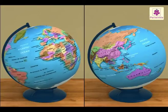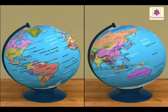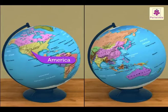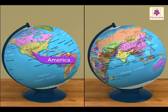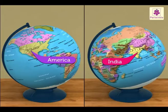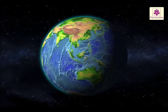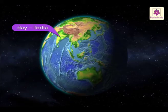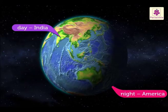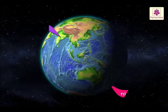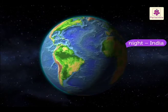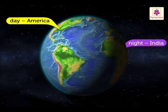Look at the globe. You will see that America is located exactly on the opposite side of India. Therefore, when it is daytime in India, in America it will be night. When we have night in India, in America it will be daytime.